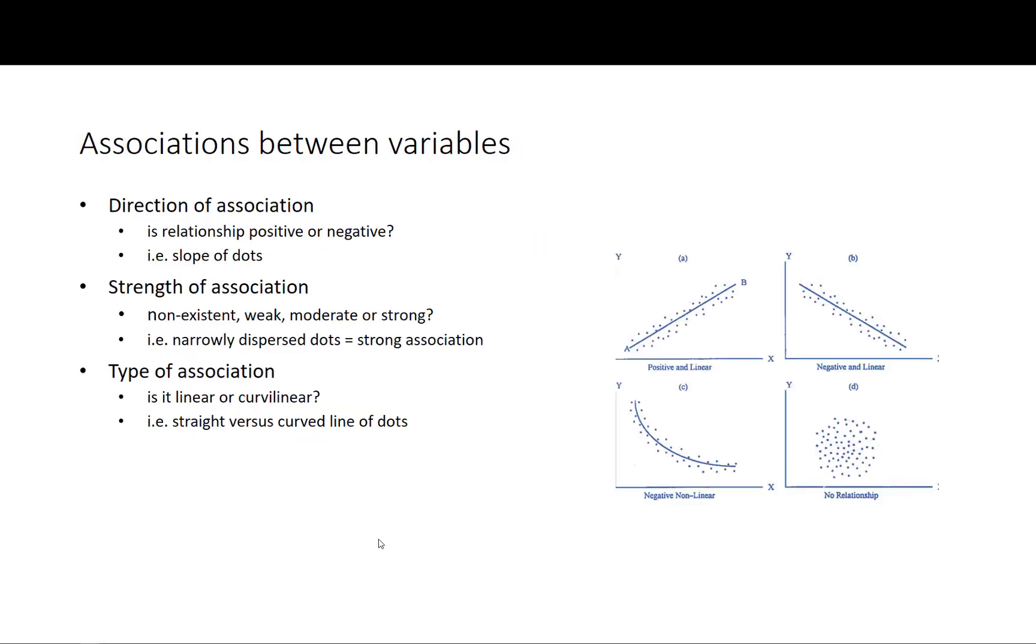In terms of describing relationships or describing associations, we have three main criteria. We have the direction of the association whether it's positive or negative. In the diagram on the right hand side here, a positive relationship is shown on this top left hand diagram where A positively relates to B as it goes up the X and Y axis. A negative relationship is shown in this B quadrant here on the top right hand side where it slopes downwards on the X and Y axis.